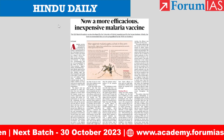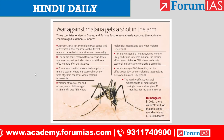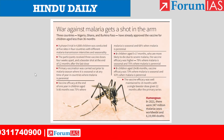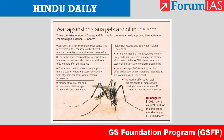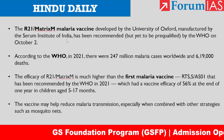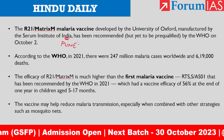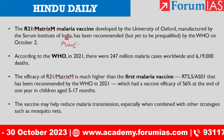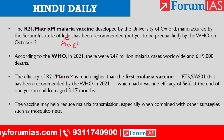Our next editorial is on a more efficacious and inexpensive malaria vaccine. The malaria vaccine R21 Matrix M was developed by the University of Oxford and is manufactured by the Serum Institute of India, based in Pune. You can expect a question like: 'R21 Matrix M was in news — it is related to which of the following?' It is a malaria vaccine.